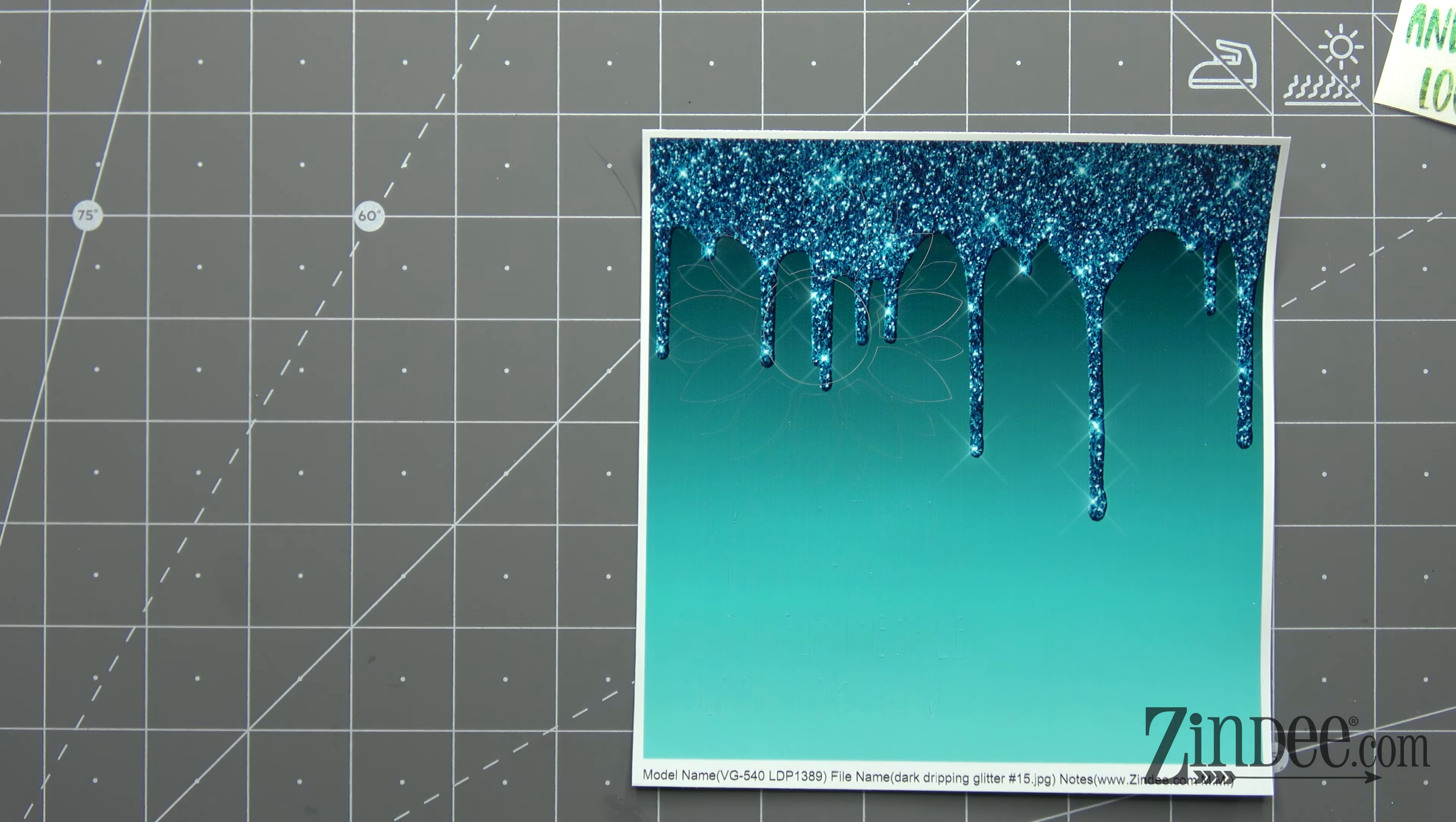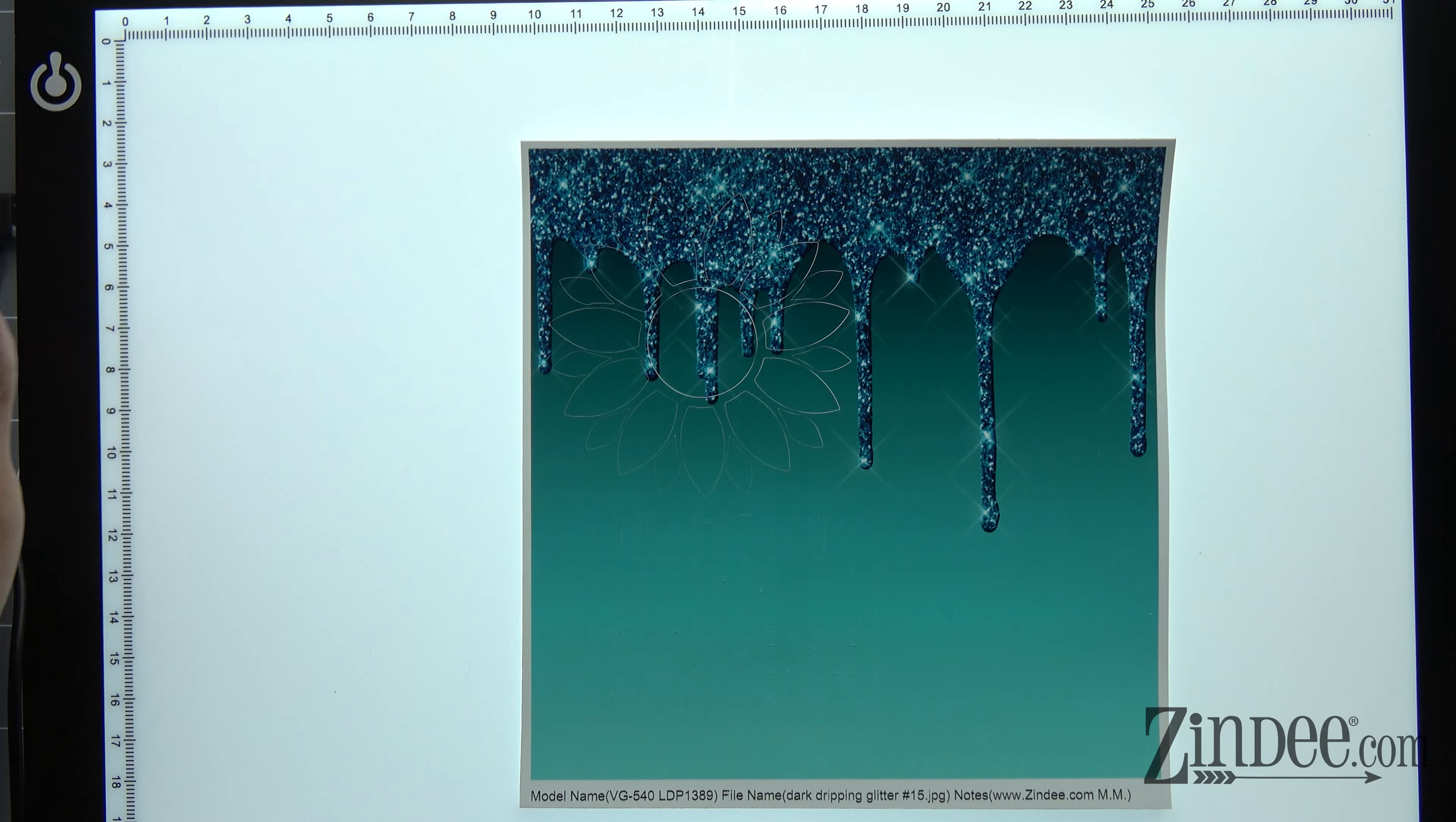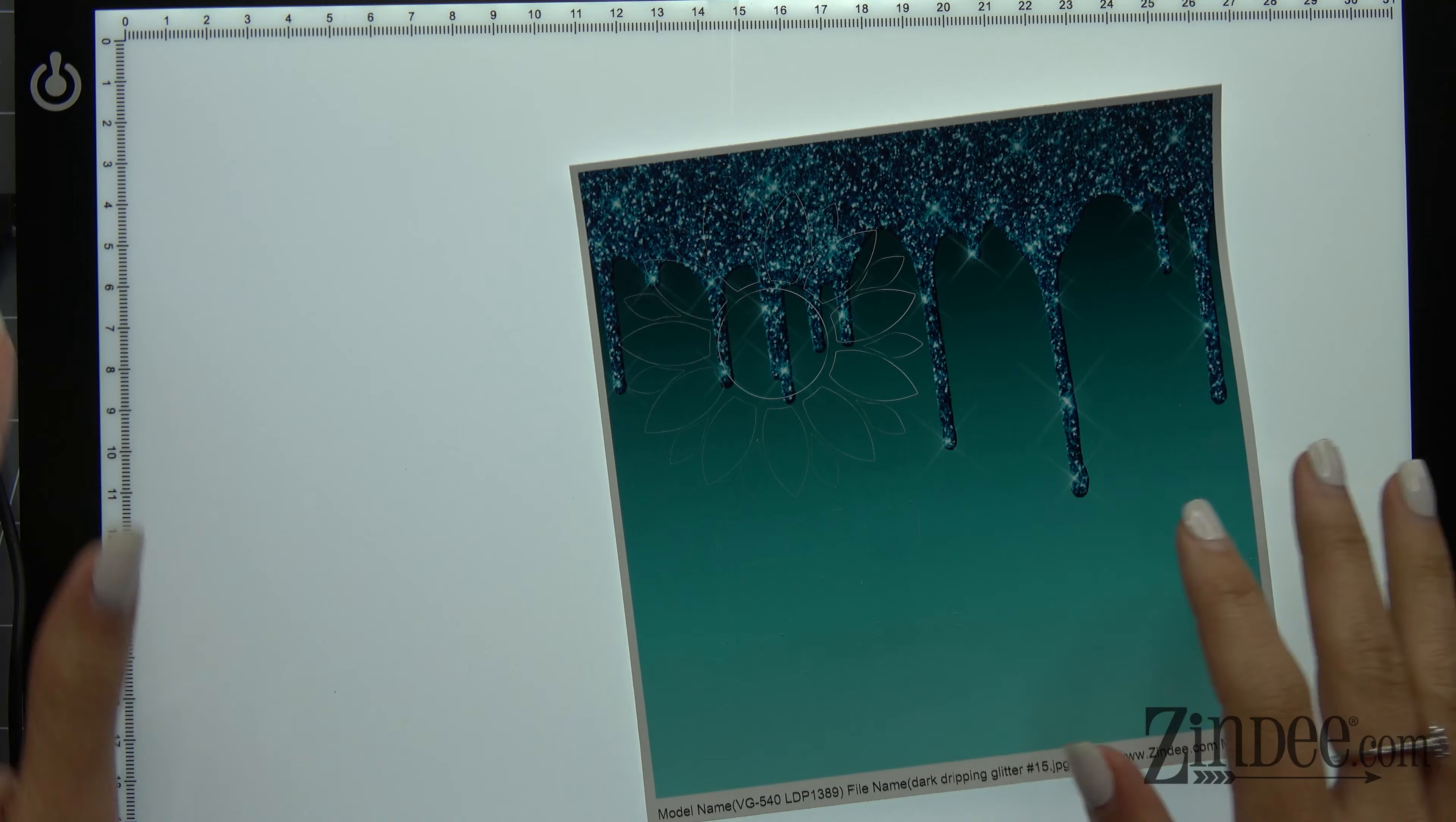Let me get this light pad so you can see the cut lines better. If you don't have a light pad, they're super amazing for weeding because they show those cut lines so much easier. When you turn it on now, you can see those cut lines just a little bit easier.